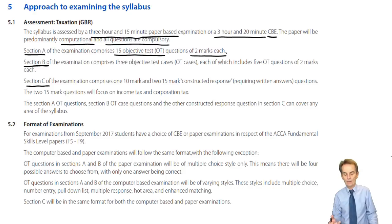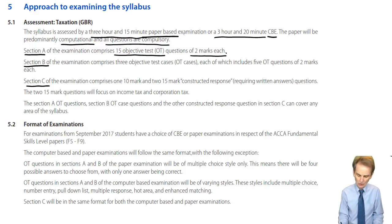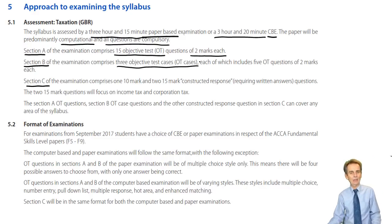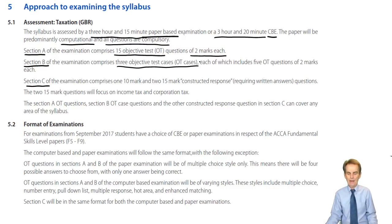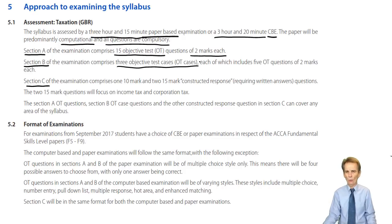In relation to the written paper, the structure of all objective testing questions — not just in Section A but also in Section B — they are in objective testing form. All of these are going to be multiple choice: you'll have to select from four available options which one you think is the right answer. It is critical that you look at that requirement and think about it carefully before attempting to answer.